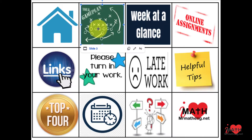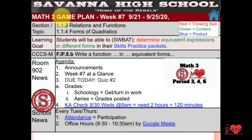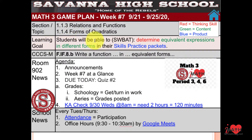So let's go to the game plan — you can click on that. Week number seven, September 21st to September 25th, 2020. We're working on 113 and 114. Learning goals: students will be able to determine equivalent expressions in different forms in their skills practice packets. We're talking all these equivalent forms — now we're talking about quadratics and their different forms.